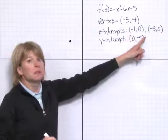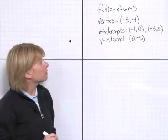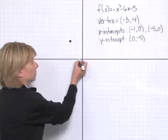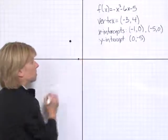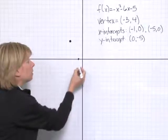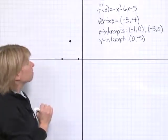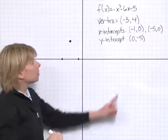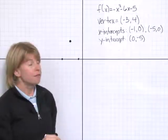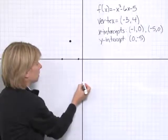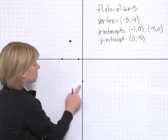And we have two x-intercepts. I've written them as ordered pairs. The first one is (-1, 0), which is there. And the second one is (-5, 0). And our y-intercept is (0, -5). So on the y-axis, the parabola will cross right there.